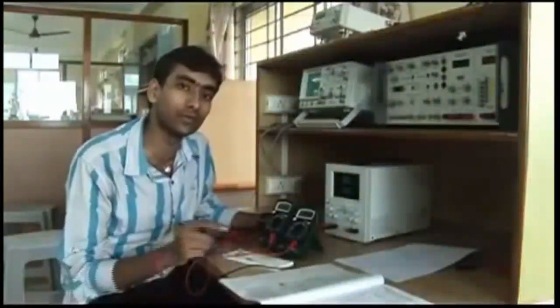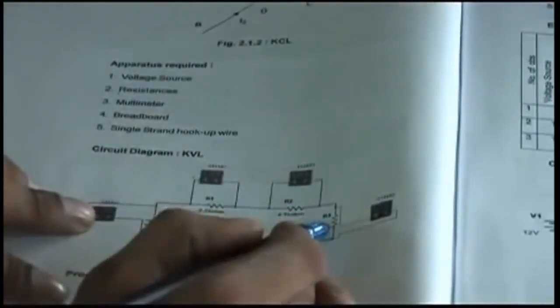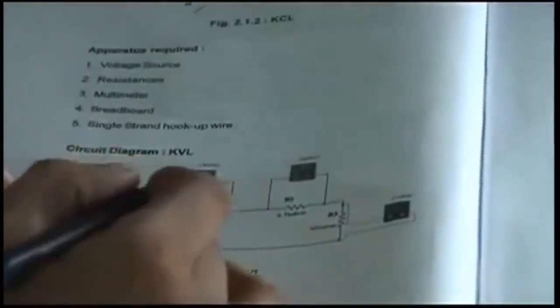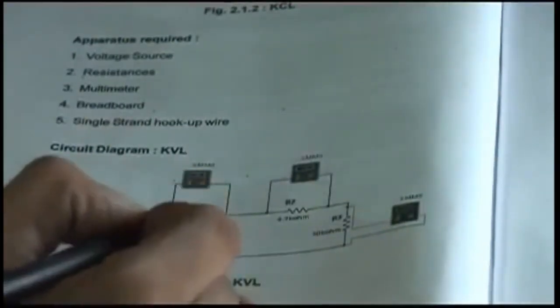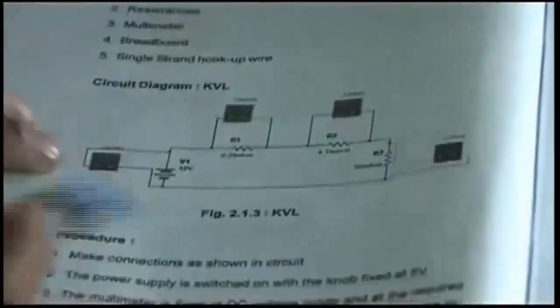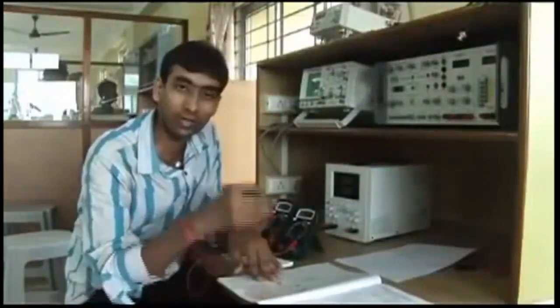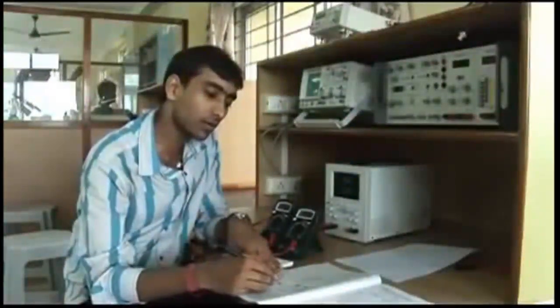Let me explain using the circuit. This circuit is used for KVL — it has a source and resistances connected in series. KVL states that the total voltage equals the voltage drop across each of these resistances. We can calculate the total voltage using a multimeter as a voltmeter connected across the source, and use additional multimeters across R1, R2, and R3 to measure individual voltage drops. We have implemented this circuit on the breadboard and I will now show you the different values.